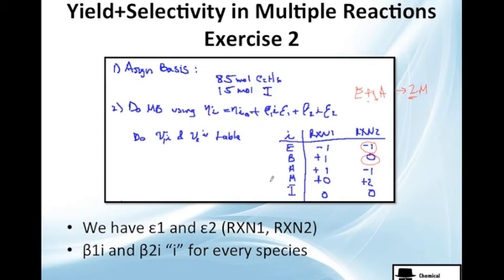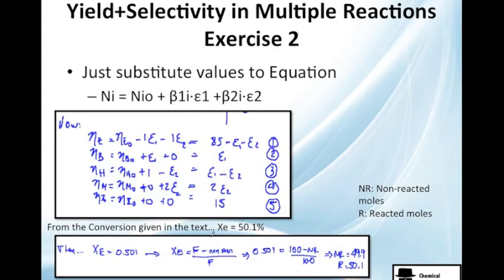Once we have epsilon, well, once we have these, we can go and calculate epsilon 1 and epsilon 2. So, let's do it. From the last table, just substitute in here and you will get this system. We've already done this before. I'm not going to repeat it. You need help, go to exercise number 1. Or simply just check it. So, good. We have E, B, H, M and inert.